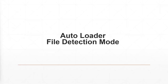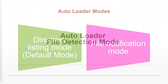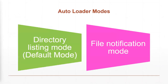Hi everyone, welcome back to my YouTube channel. In this video we will talk about auto loader, and specifically a mode known as file detection mode. In the last video I discussed the two different modes available in auto loader: the first is directory listing mode and the other is file notification mode. Directory listing mode is the default, which I already explained in my previous video, so in this video we will be mostly focusing on the file notification mode.